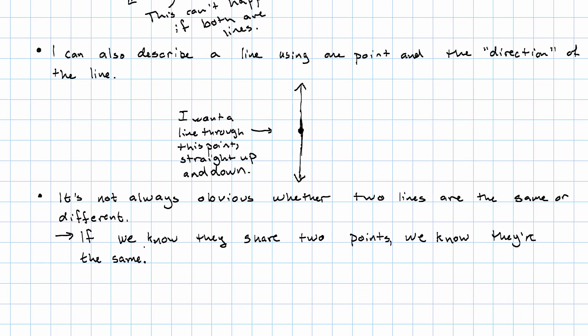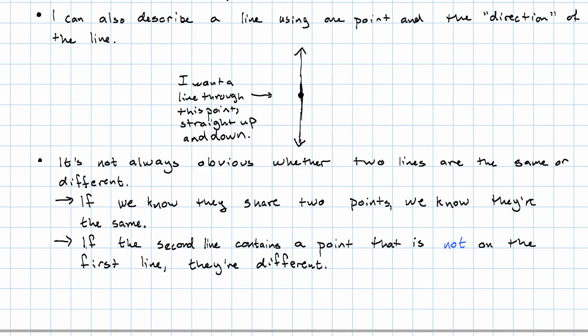However, we do know this. If the second line has a point that's not on the first line, then they're different. Being the same line means being on all the same points. What about this direction idea?